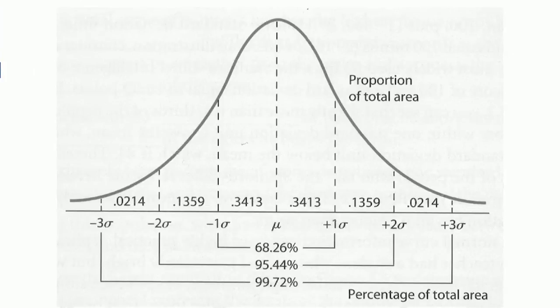Okay, this is the Gaussian distribution, also called the normal distribution. And you could call it the bell curve as well. Now, first, before we get into it,